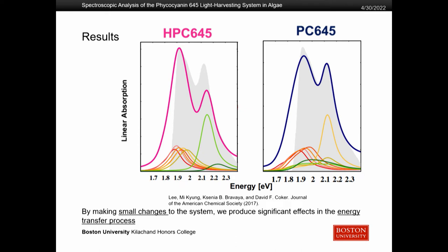We can look at this in another way. Here on the x-axis you're looking at energy, and on the y-axis you're looking at the absorption of that light. Again, just by making a small change, we got a huge effect in the excitation energy transfer process. You can see that by removing that hydrogen, you actually get an increase in the amount of energy that is absorbed at higher energies.